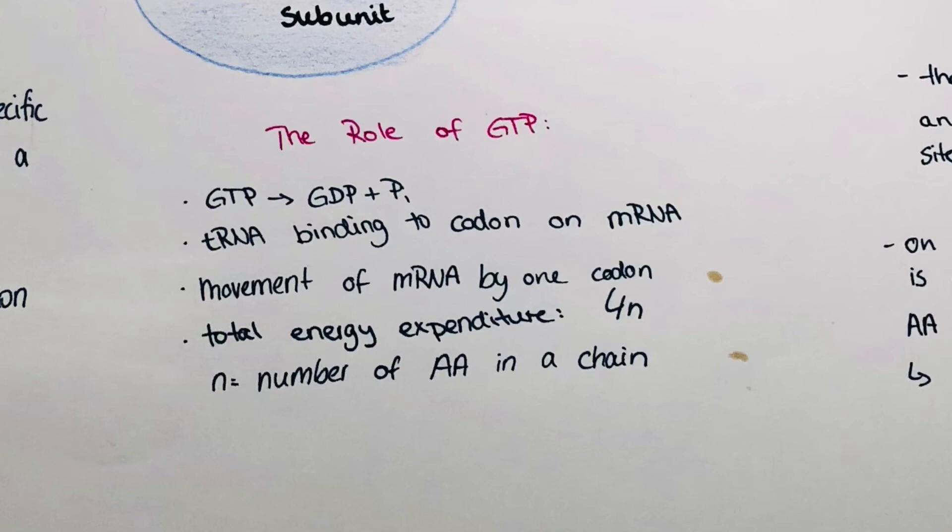And we can calculate the total energy expenditure of translation. It is 4n where n means the number of amino acids in the chain. So if our amino acid chain is 50 amino acids long we will need 4 times 50 GTP molecules. So the whole process will use up 200 GTP molecules.